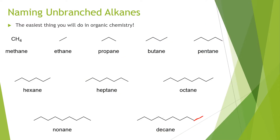Naming the unbranched alkanes: a one-carbon alkane is methane, two carbons is ethane, and so forth.